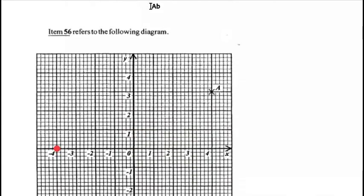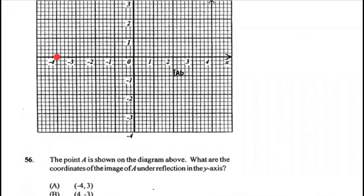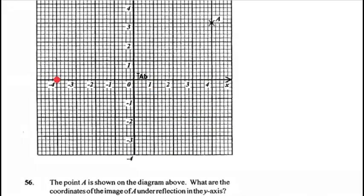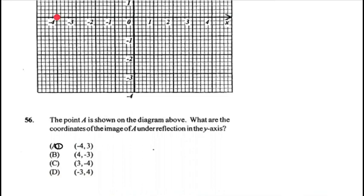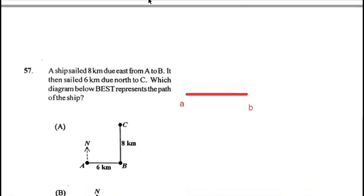Question 56: reflecting point A in the y-axis. From the y-axis the point is 1, 2, 3, 4 units away, and it is 3 units high, so the reflection falls at (−4, 3). Remember: when reading coordinates always read the x-axis first, then the y-axis. A common mistake is writing (3, −4) — always x then y. Answer for 56 is A.